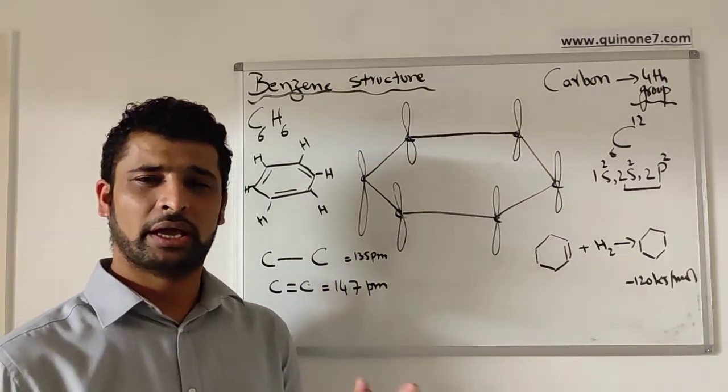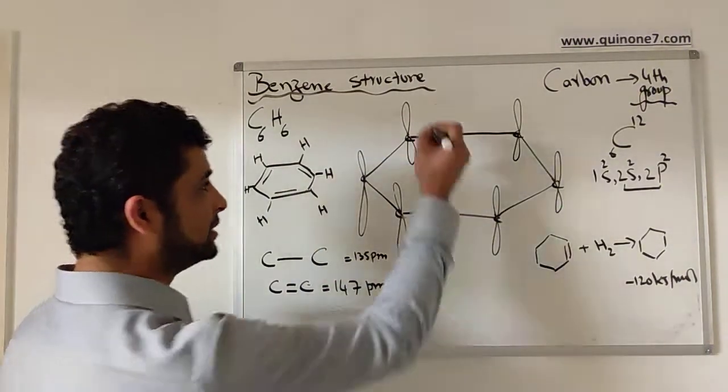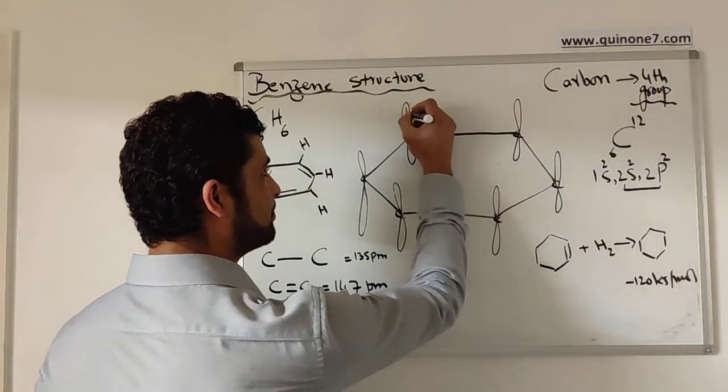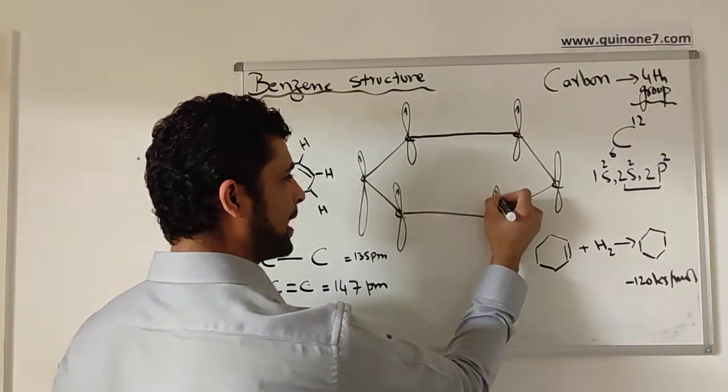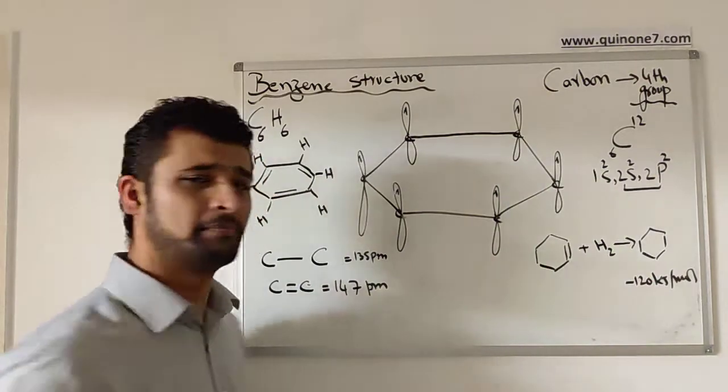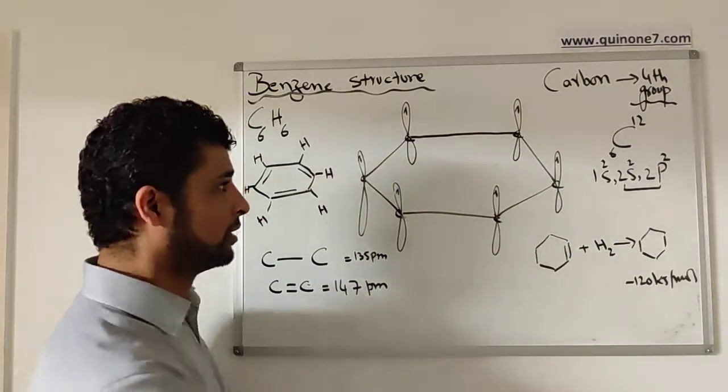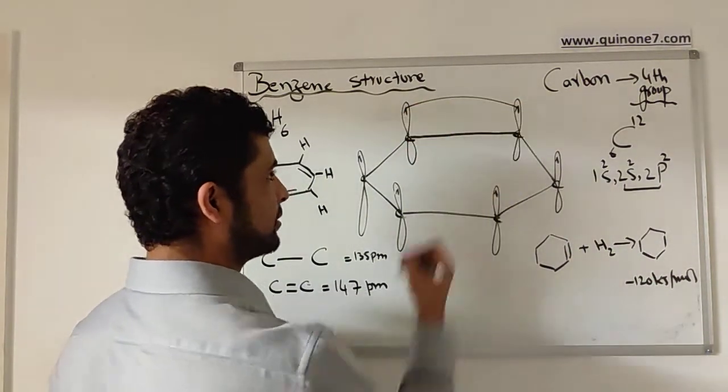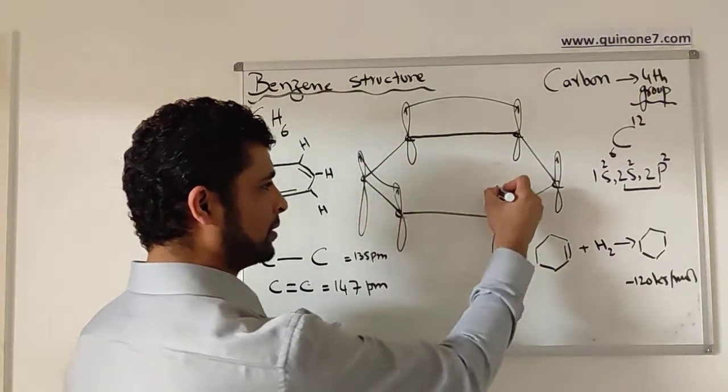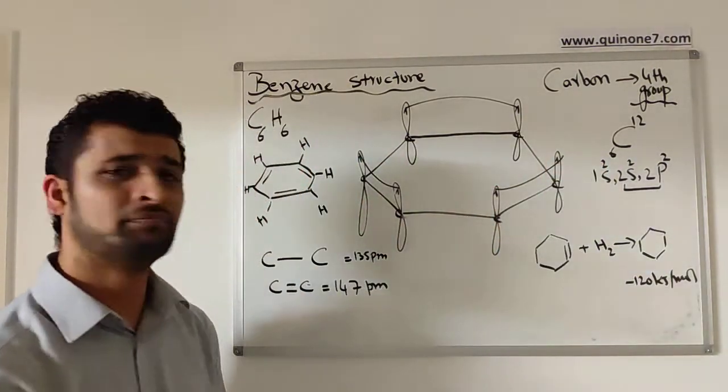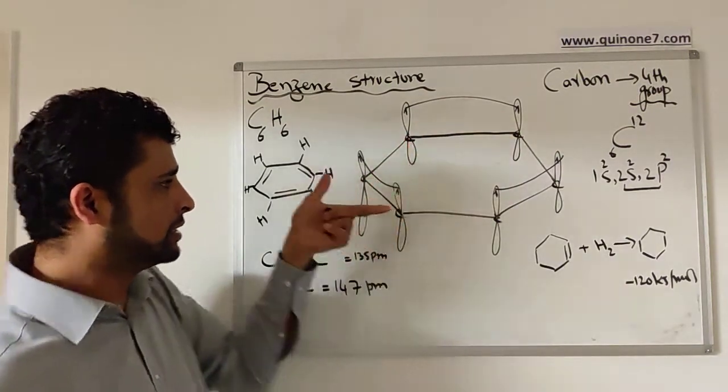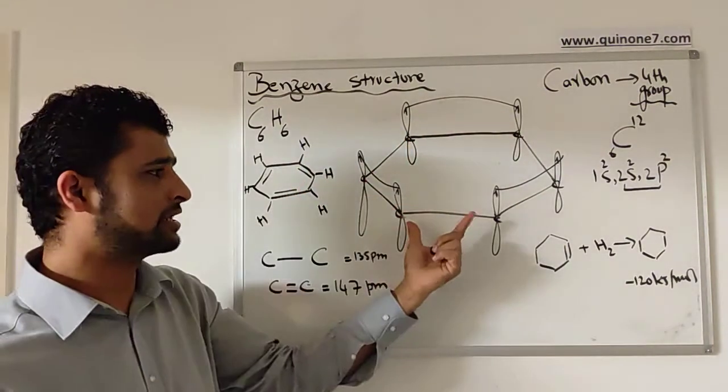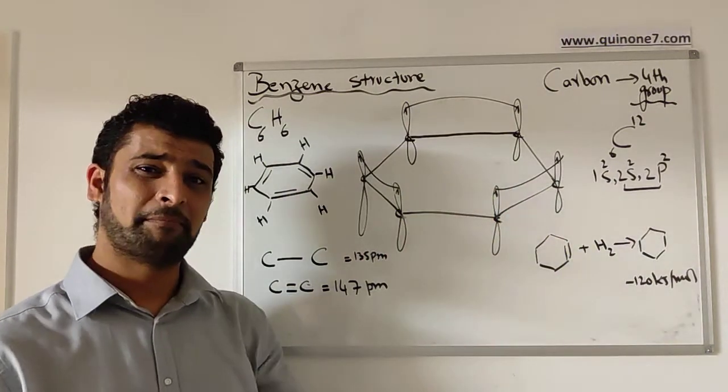...which are perpendicular to the plane of the benzene ring, actually overlap with each other. That means there would be single bond, double bond, single bond, double bond pattern, but through x-ray diffraction the bond length is actually the same.